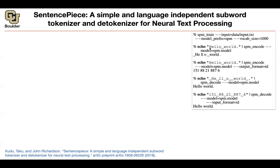Once training is done, you can write a text like 'hello world' and pipe it into spm_encode using the model you just trained, and it will output the word pieces. But ultimately, any sentence needs to be translated into a sequence of integers — that's what the computer uses. You set the output format to IDs, and these are the IDs of the word pieces in the dictionary.